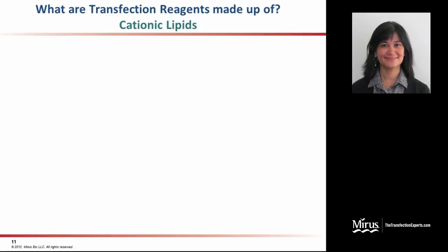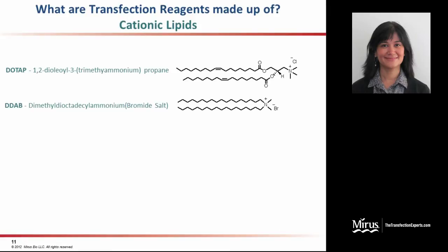The reason transfection reagents are able to complex with nucleic acids effectively is inherent in their composition. A vast variety of commercially available transfection reagents are made up of cationic lipids. Cationic lipids are polar lipids that are formed of a highly positively charged head group attached to long hydrophobic tails.